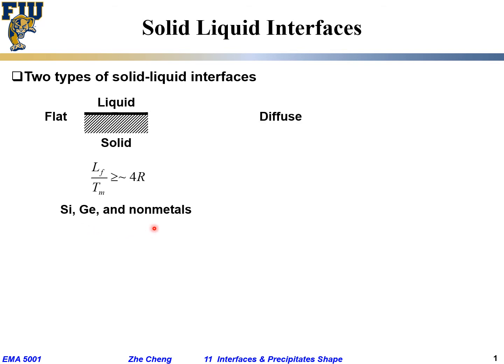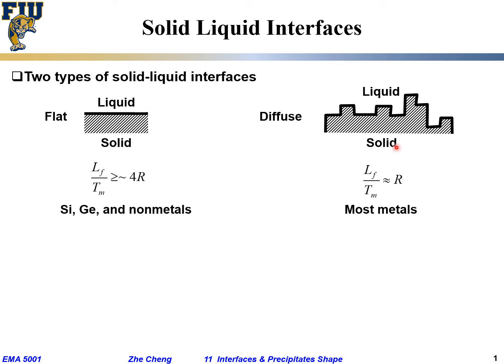In comparison, for many metals we call them so-called diffuse interface between the solid and liquid, which means at atomic scale it would be one atom up, one atom down, up and down at atomic scale. That is the case for most metals when the latent heat for fusion divided by melting point is roughly the gas constant.